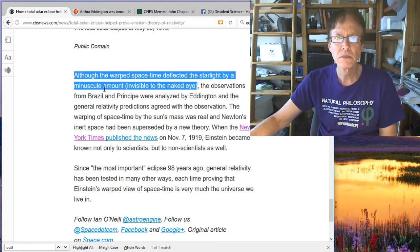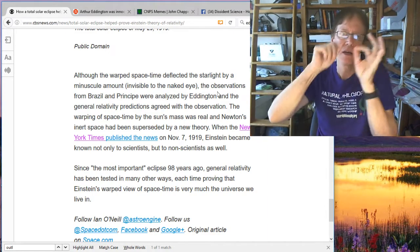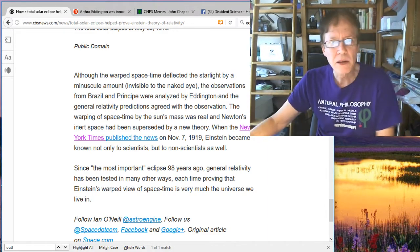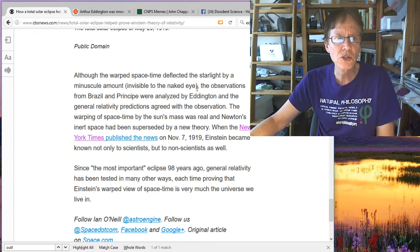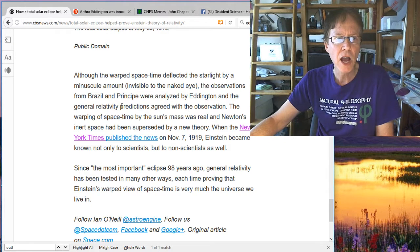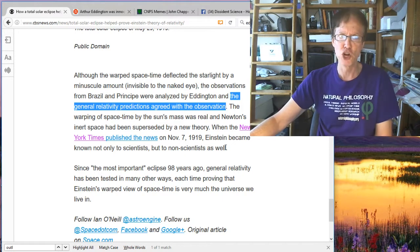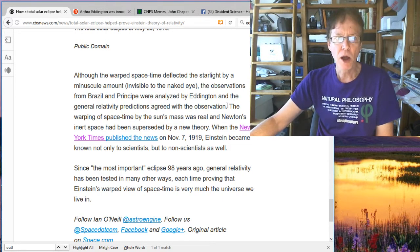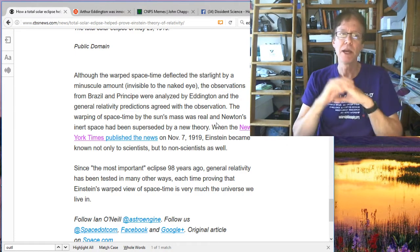Of course, they're using photographs, so I'm not sure what they mean by that. And these photographs weren't exactly, and they're somewhat detailed, but you can see this with the naked eye, I guess. But maybe a few little teeny dots that were different in analyzing, no big deal. The observations from Brazil and Principi were analyzed by Eddington, and they agreed, and the general relativity predictions agreed with observations. The warping of space-time by the sun's mass was real, and Newton's inert space had been superseded by a new theory.